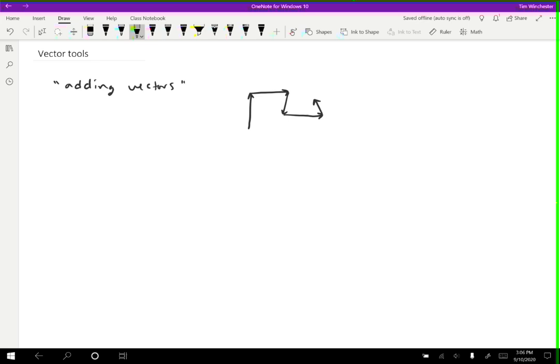What we could have done instead if you weren't trying to make your pirate map confusing is you could have just gone from the very beginning directly to the end, but then it isn't a very good pirate map. So the rule that we use when we're adding vectors together in this way is we add them head to tail.